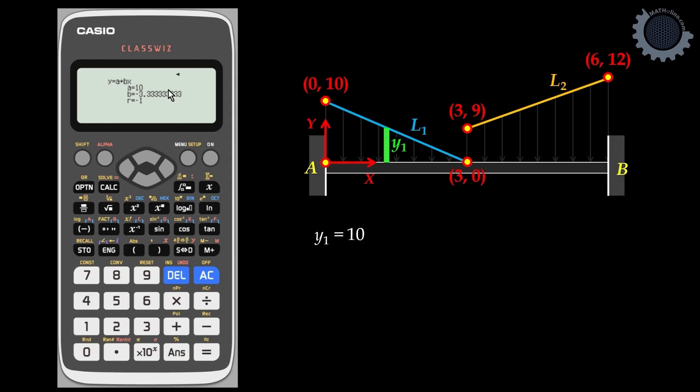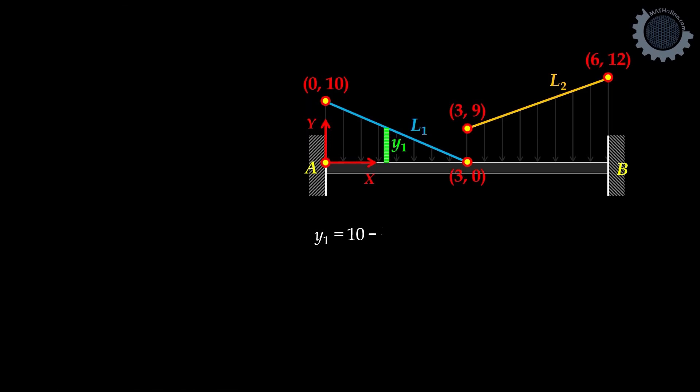If we want to find the fractional equivalent of B, go to AC, option, downward arrow, number 4. We have this B, the value of B. Press 2, equals. To convert this into fraction, or to display this into fraction, press this button. Negative 10 over 3. Y1 is equal to 10 minus 10 over 3 X1.